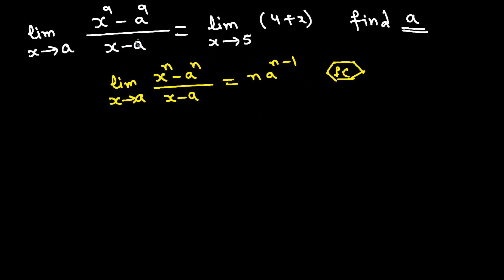On the left side, n = 9, so the limit equals 9·a⁸. On the right side, plugging in x = 5: 4 + 5 = 9. So we have 9a⁸ = 9. Dividing both sides by 9 gives a⁸ = 1.